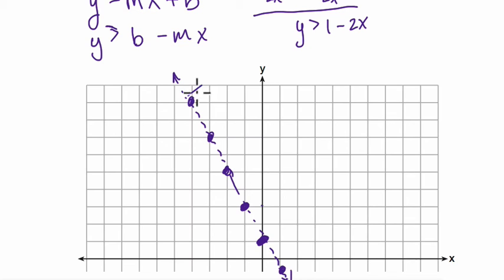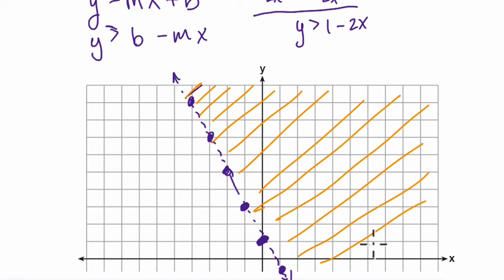Then we just shade everything above the line. And I'll just switch colors for that, because it's all of the heights above this line. Shade it up. And we shade below it if it was less than.